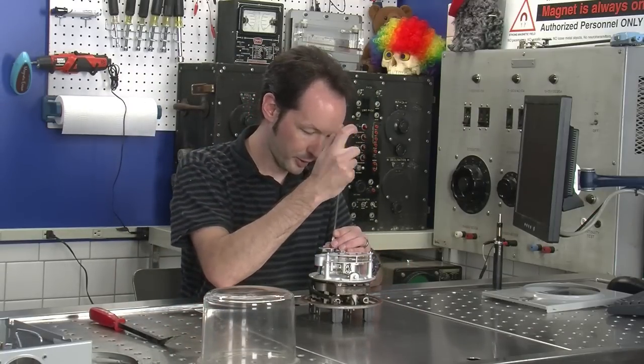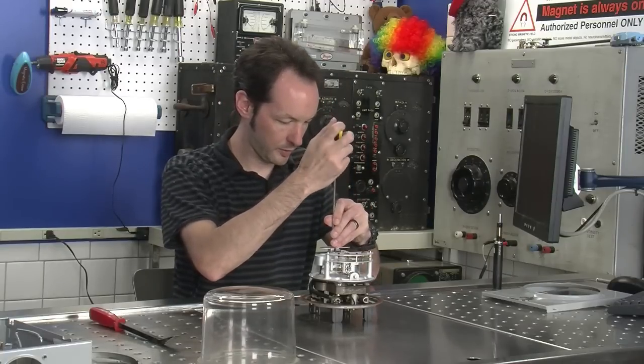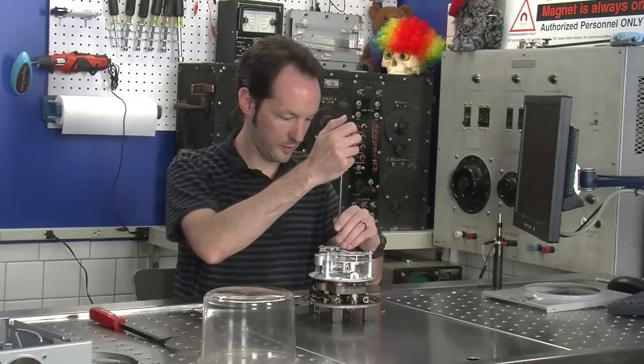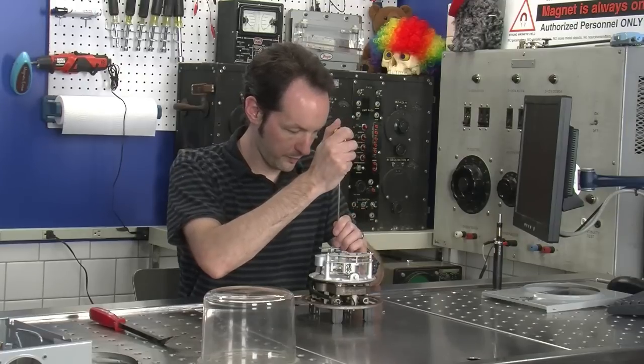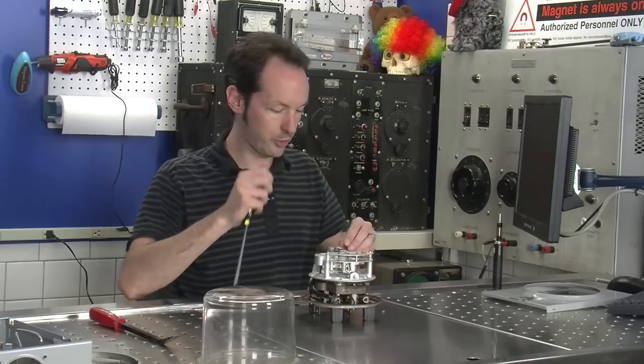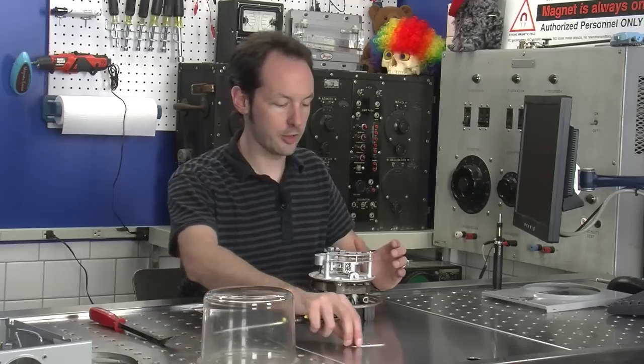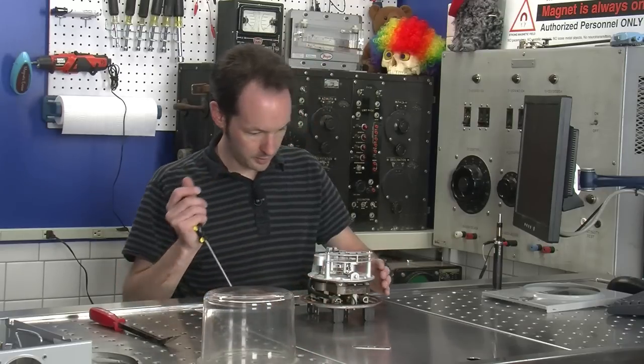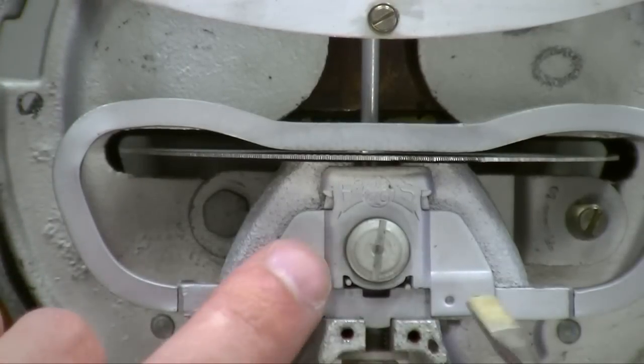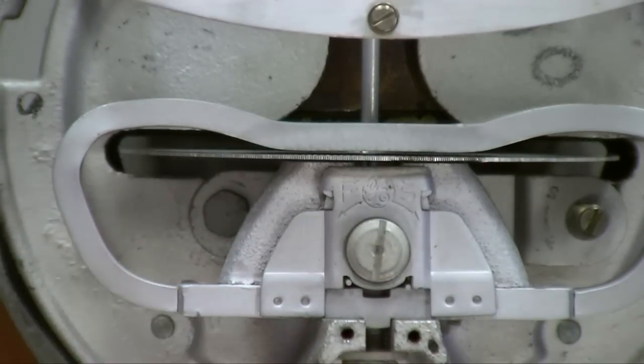I'm going to start by taking off the little maker plate. This meter is made by General Electric. I'm pretty sure Western Electric also makes a bunch of them. There's an adjustment screw right here. There's a little F here and an S here. So this is faster or slower. This is to calibrate the meter.